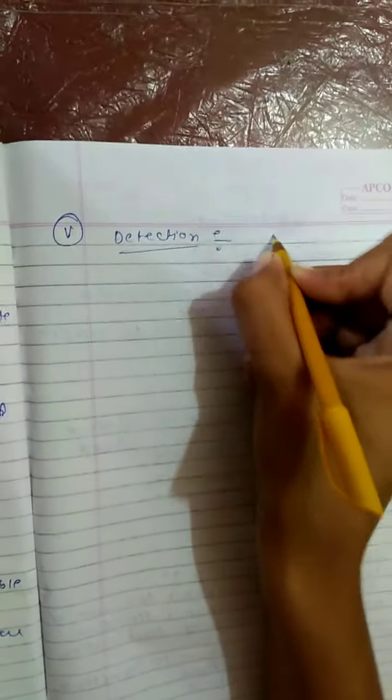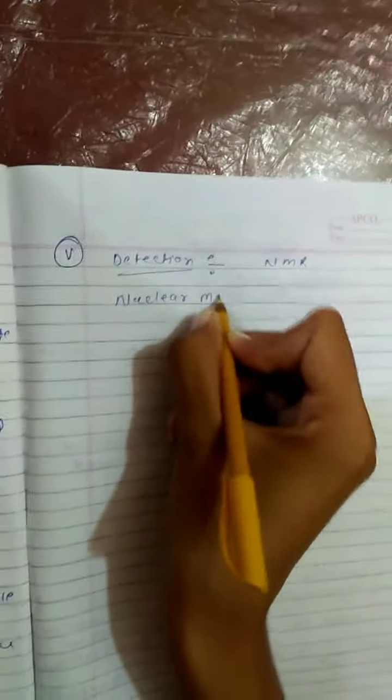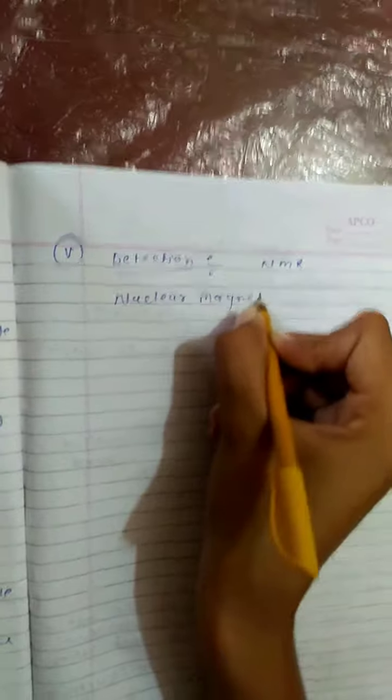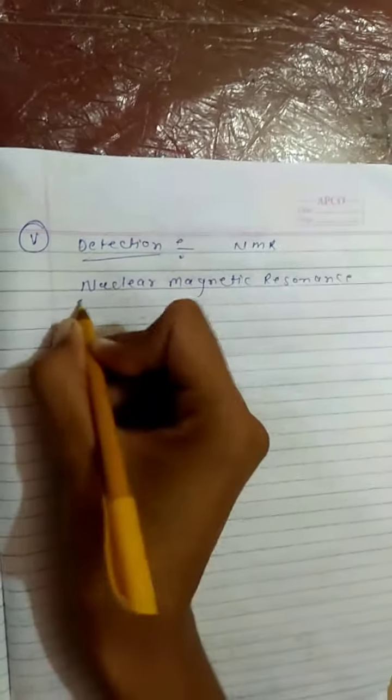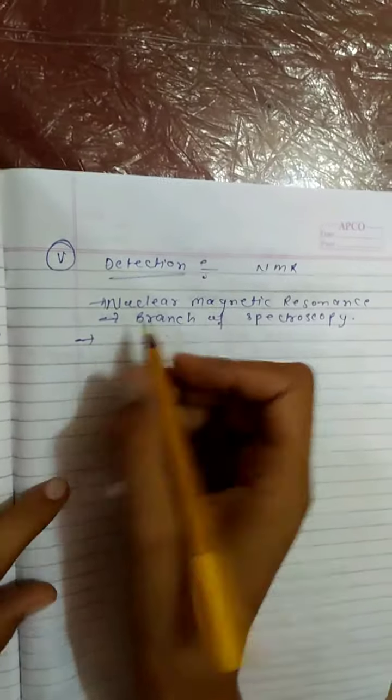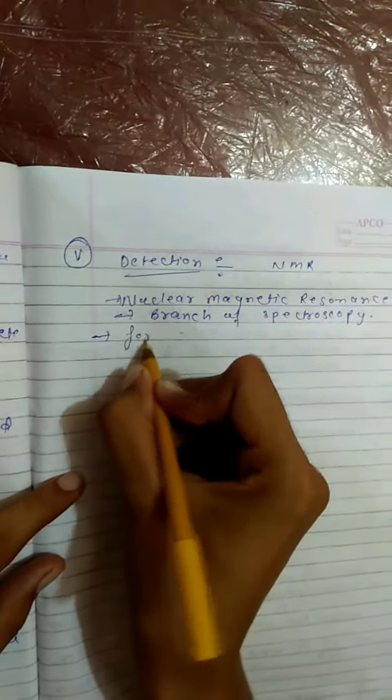Now the detection of carbocation. Carbocation is detected by NMR, nuclear magnetic resonance, which is a branch of spectroscopy. Its formation occurs by SN1 mechanism.